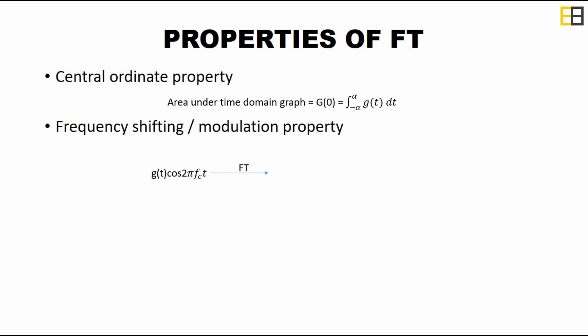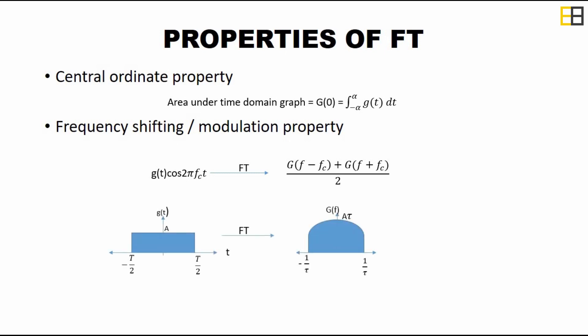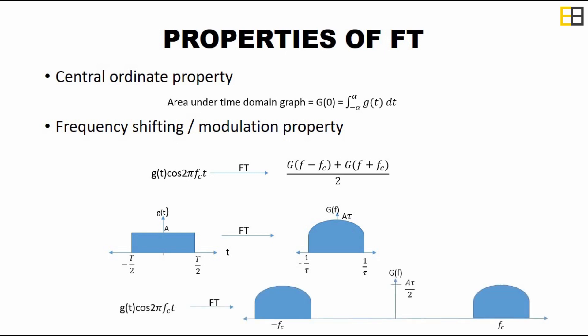The next property is the frequency shifting or modulation property, which is very important in communication. Consider a signal g(t) multiplied with cos(2πfc·t). When we take the Fourier transform, by this property we get a shifted version of the signal in the frequency domain with half the amplitude. For a rectangular function g(t), whose Fourier transform is a sinc function G(f), when multiplied with cos(2πfc·t), the sinc function shifts to higher frequency fc. This shows that the cosine function is used to shift from lower to higher frequency, which is also known as modulation.